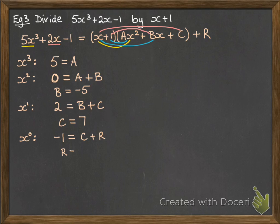And our constant terms. Well, that will be the remainder that's left at the end, as well as the c that can come out of that bracket there. So we get the remainder is equal to minus 8.